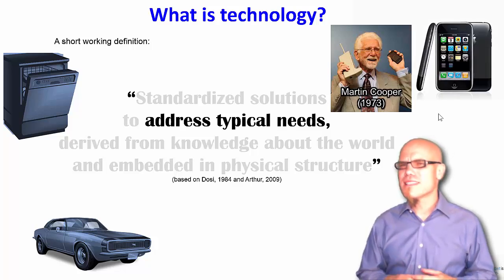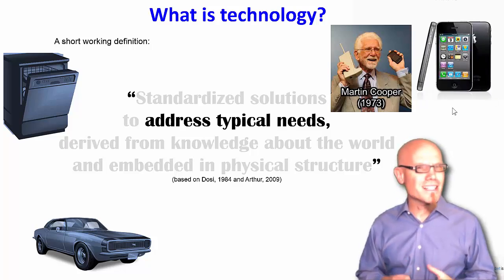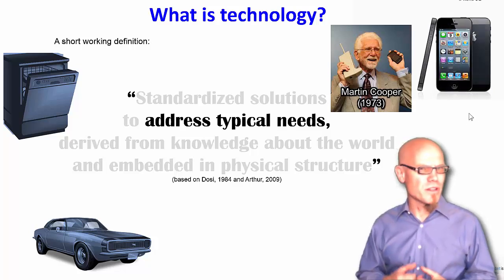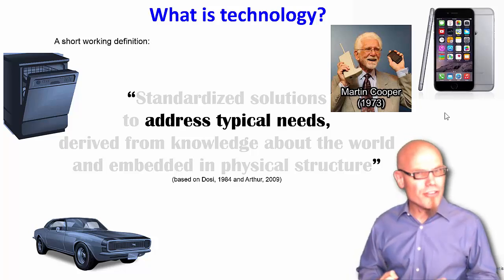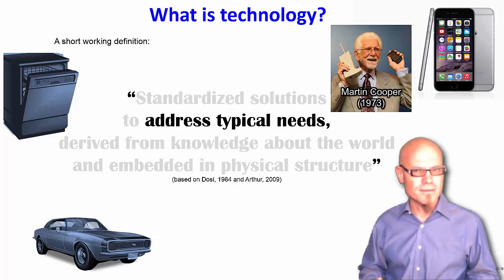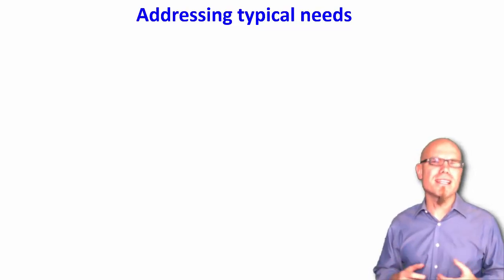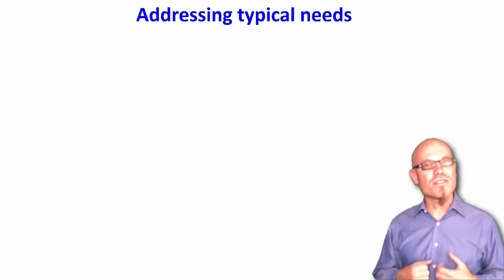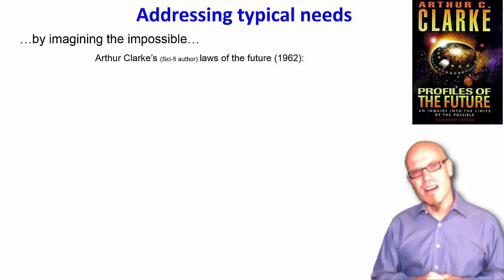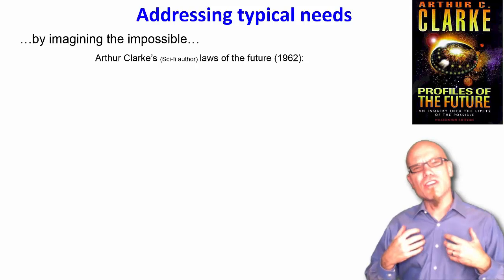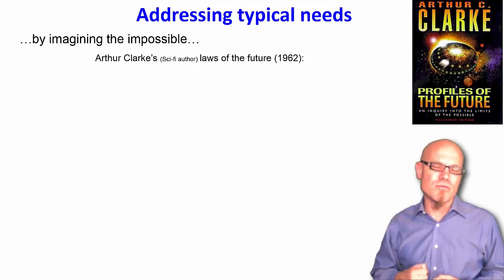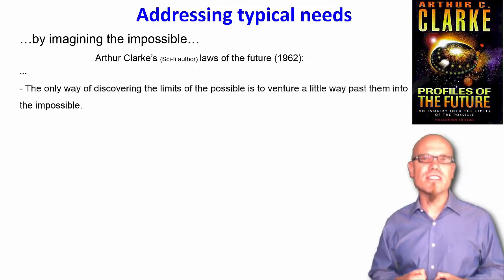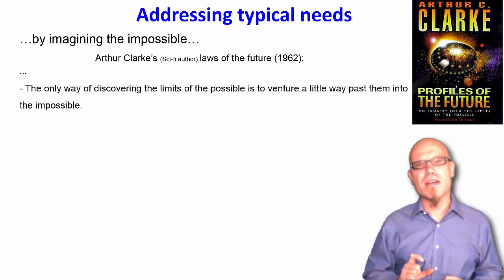We also all know that technology is evolving, and basically what that reflects is that our typical needs seem to evolve. Now, didn't we always have the need for the latest smartphone? Why did we start with the iPhone 3? Well, that has to do with the possibilities to address typical needs — it was simply impossible to have the latest iPhone before we had the iPhone 3. As the seminal science fiction writer Arthur Clarke tells us, if we try to imagine new technologies, we have to venture a little bit beyond the possible and into the impossible. Arthur Clarke has three laws to profile the future, and one of them is that the only way of discovering the limits of the possible is to venture a little way past them into the impossible.